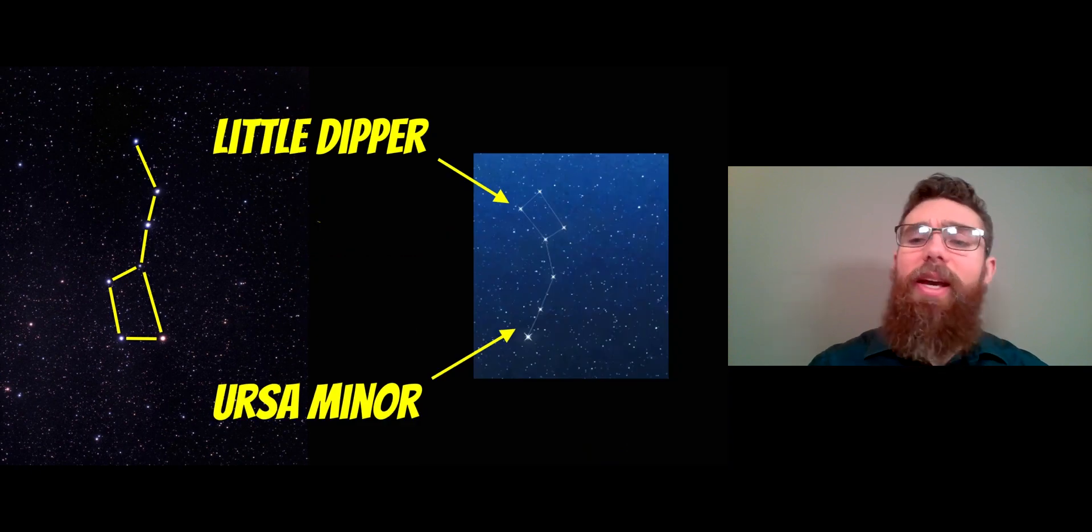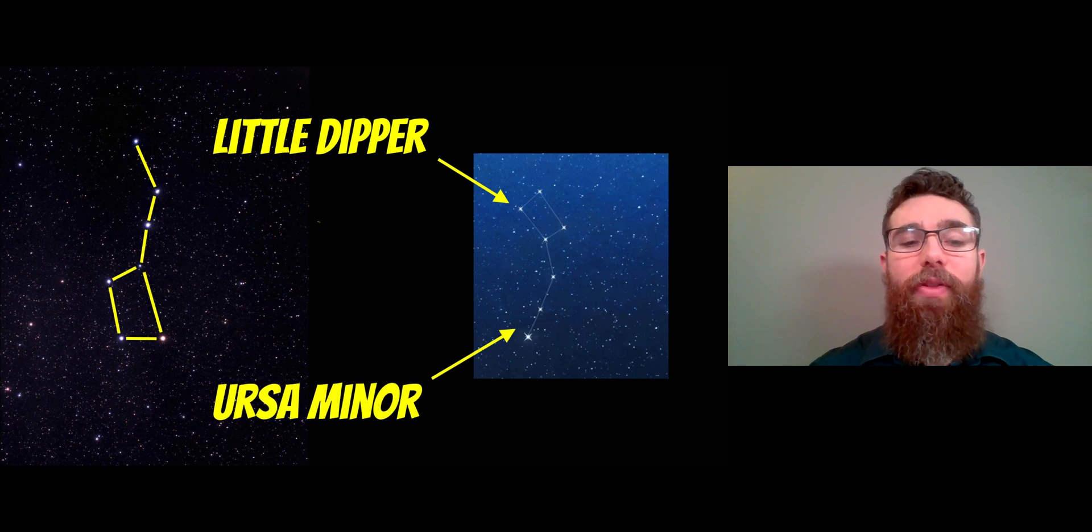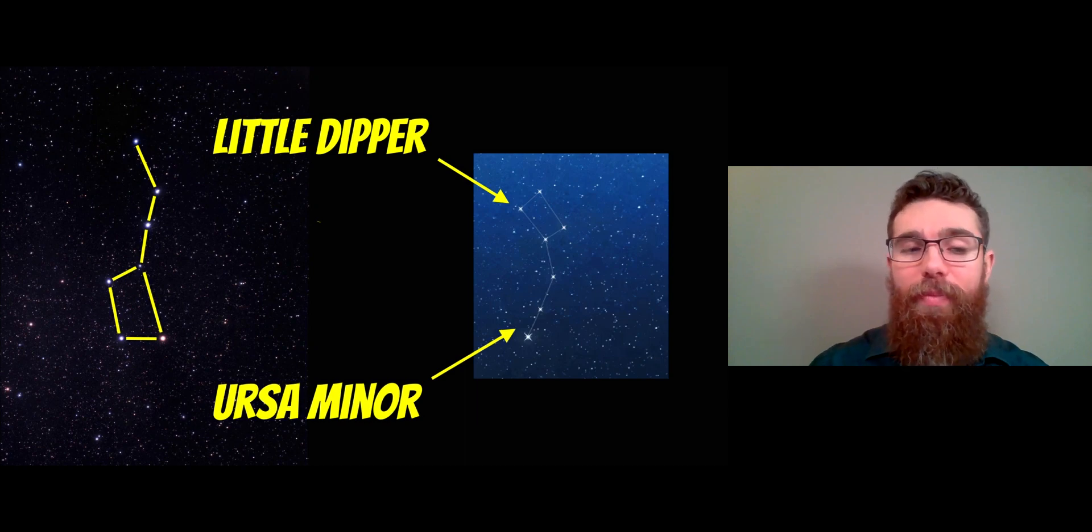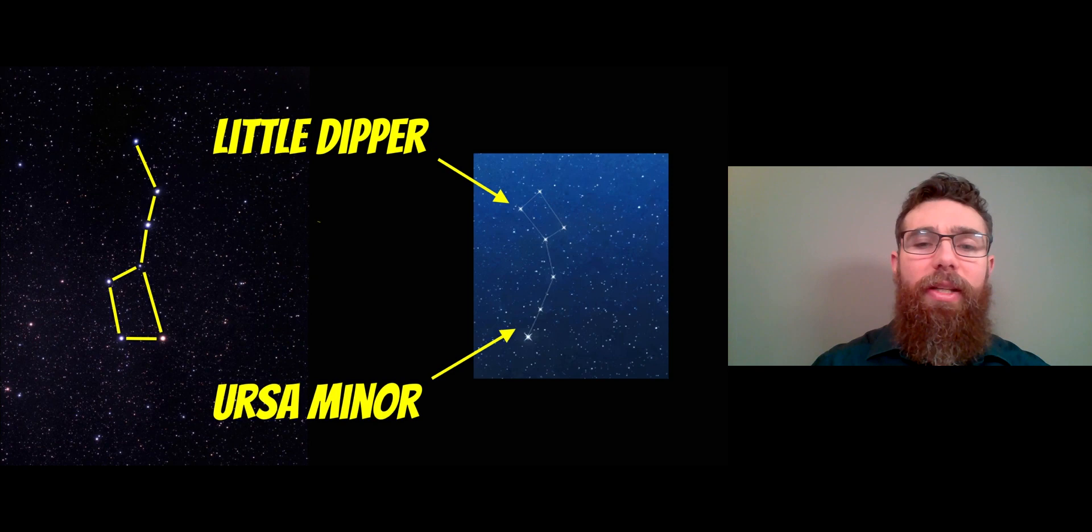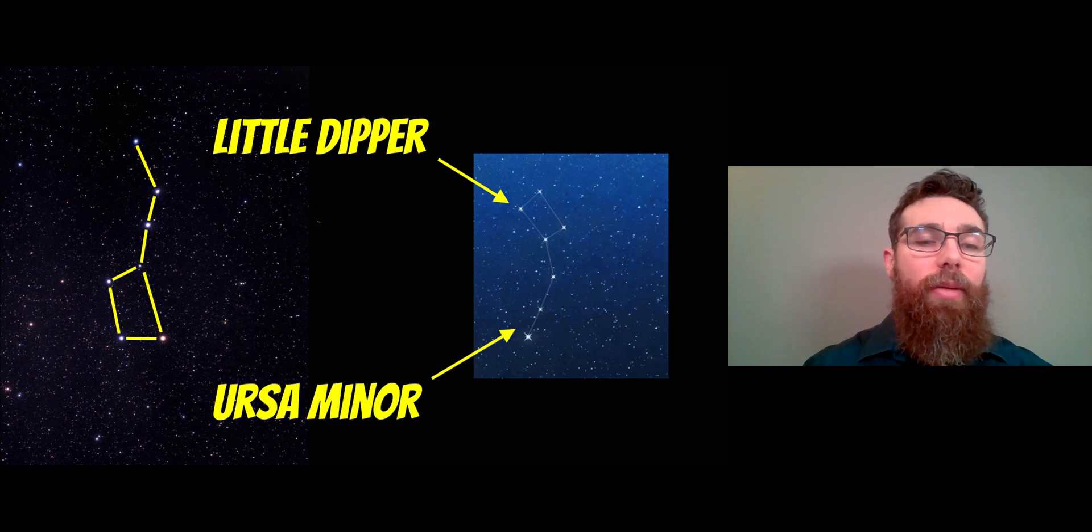Once you've found that, there will be another constellation above the saucepan. If you're thinking of the saucepan when it was level, there would be another one above it which would be upside down, and it looks fairly similar. It's actually a smaller version of the Big Dipper, and that again has a few different names: the Little Dipper, Ursa Minor. That's the one that we actually need to find which has Polaris in it.